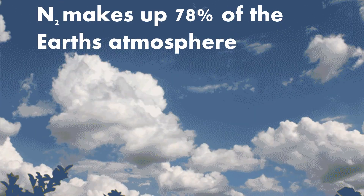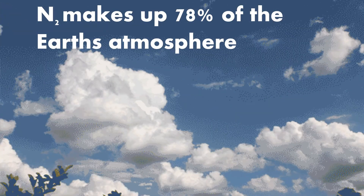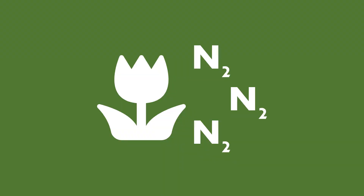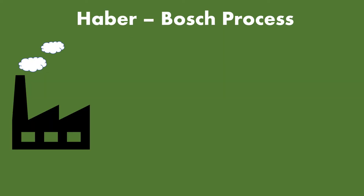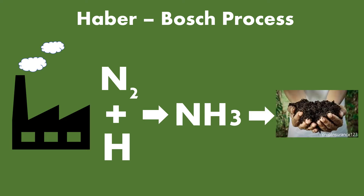Nitrogen makes up 78% of the earth's atmosphere. But unfortunately, this form of nitrogen is not available to plants. Often nitrogen in the soil is provided through the Haber-Bosch process, a chemical process that converts nitrogen from the atmosphere along with hydrogen into ammonia that is then implemented into the fertilizer that is used on agricultural fields.